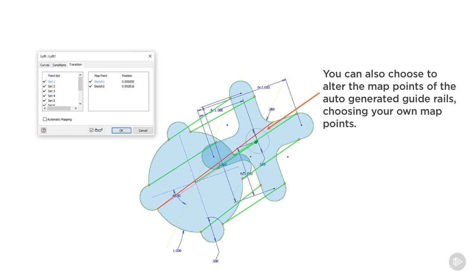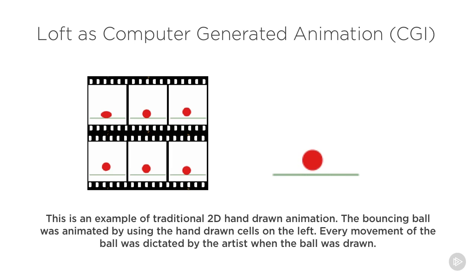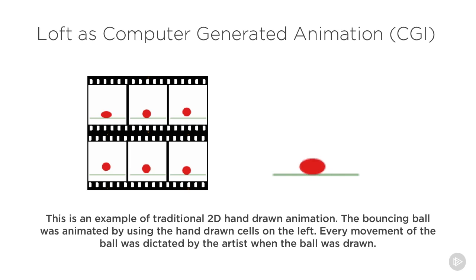Now let me discuss my concept of lofts as computer animation. This is an example of traditional 2D hand-drawn animation — the bouncing ball was animated using hand-drawn cells. Every movement of the ball was dictated by the artist; when the ball was drawn, it's not being interpreted by any computer program. Every elongation of the ball is drawn by hand.